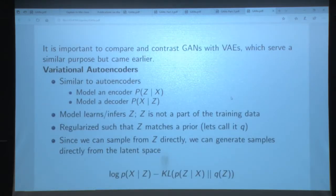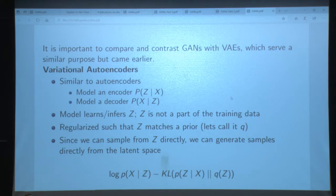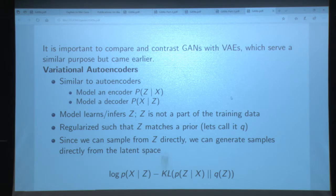Just a VAE recap: VAEs also address the issue of creating a generative model. They do it by creating an autoencoder, but the trick is that the hidden representation you're autoencoding into has to be a Gaussian. When you say it has to be a Gaussian, that means it's also something you can sample from. Your goal is to learn this Z that you can convert X into Z and back into X to reconstruct X well, while keeping Z in some known region so you can sample from it and generate X's.